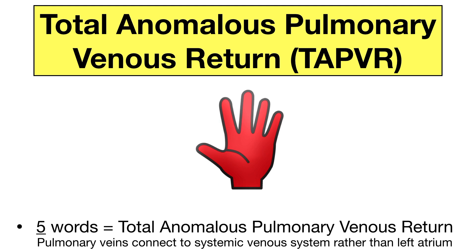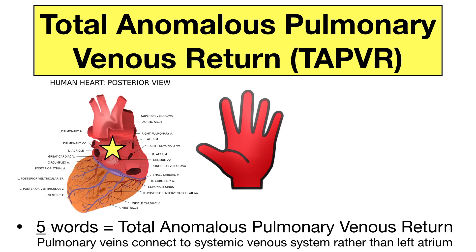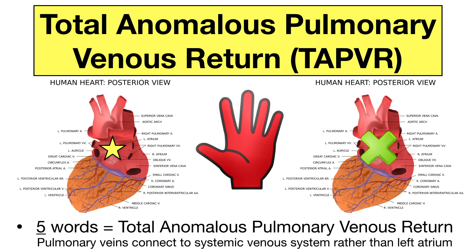The fifth cyanotic heart defect is total anomalous pulmonary venous return, or TAPVR. You can hold up five fingers to remember this because there are five words that make up the defect name. This is when the pulmonary veins connect to the systemic venous system rather than the left atrium. Normally, the four pulmonary veins deliver oxygenated blood from the lungs to the left atrium. In TAPVR, the pulmonary veins do not connect to the left atrium — instead, they connect to the systemic venous system, and the mixed blood flows back to the right atrium.